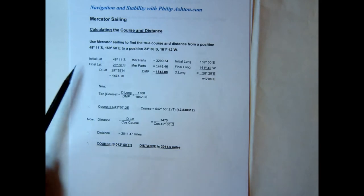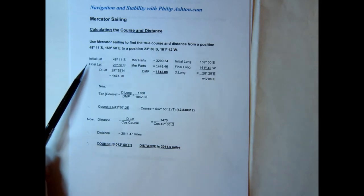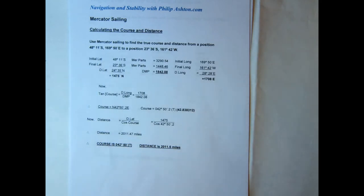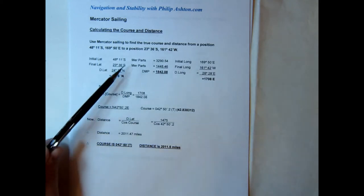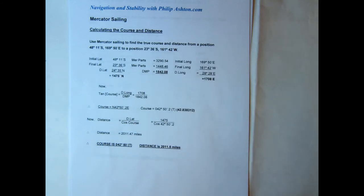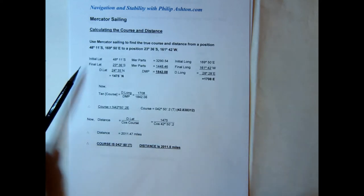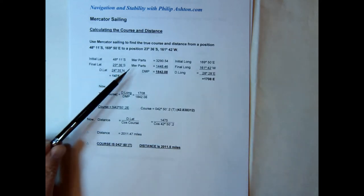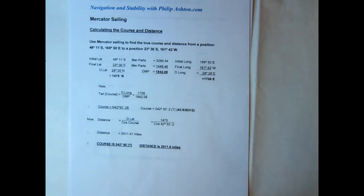Our initial and final latitudes are both southerly, so we have to subtract one from the other. For meridional parts in Mercator sailing, we get those from the Norris table. Whatever we do with the latitude we do with the meridional parts, so we subtract one from the other.